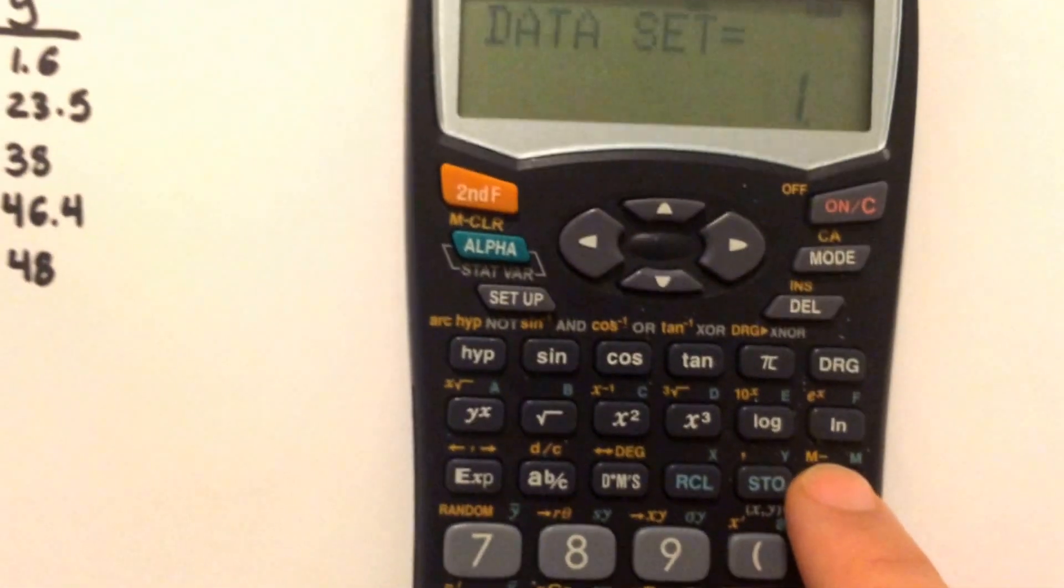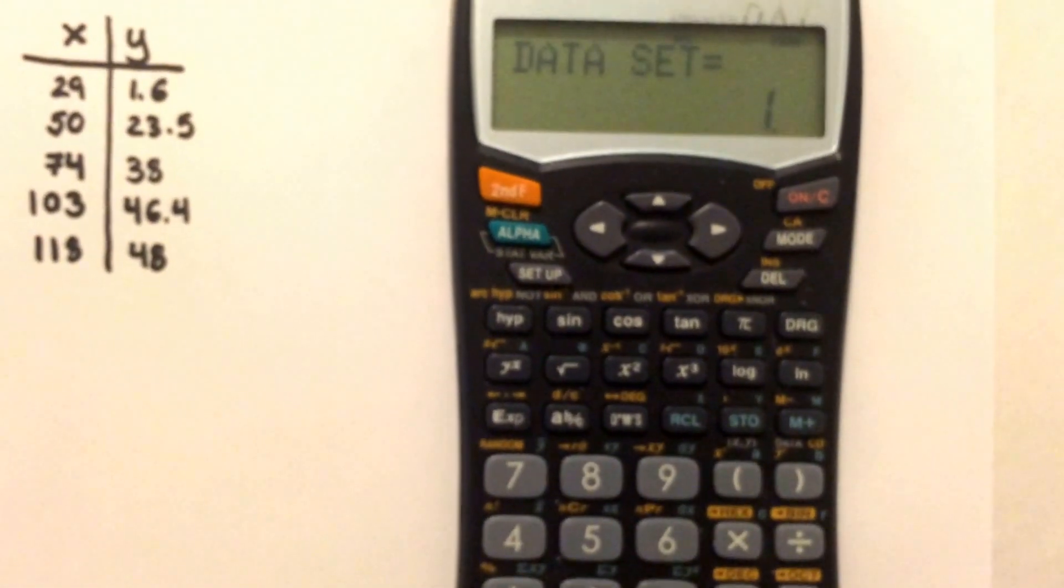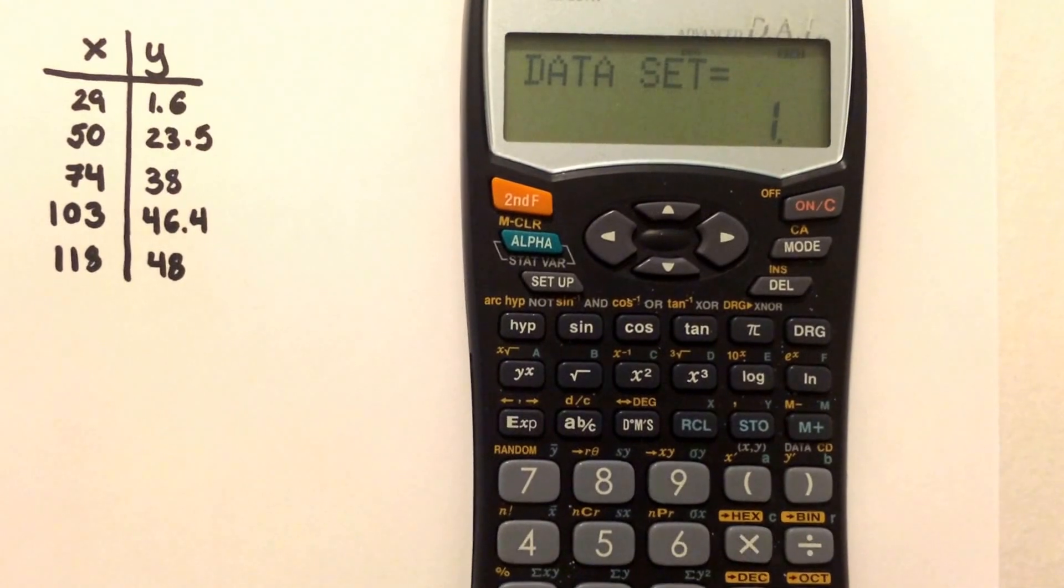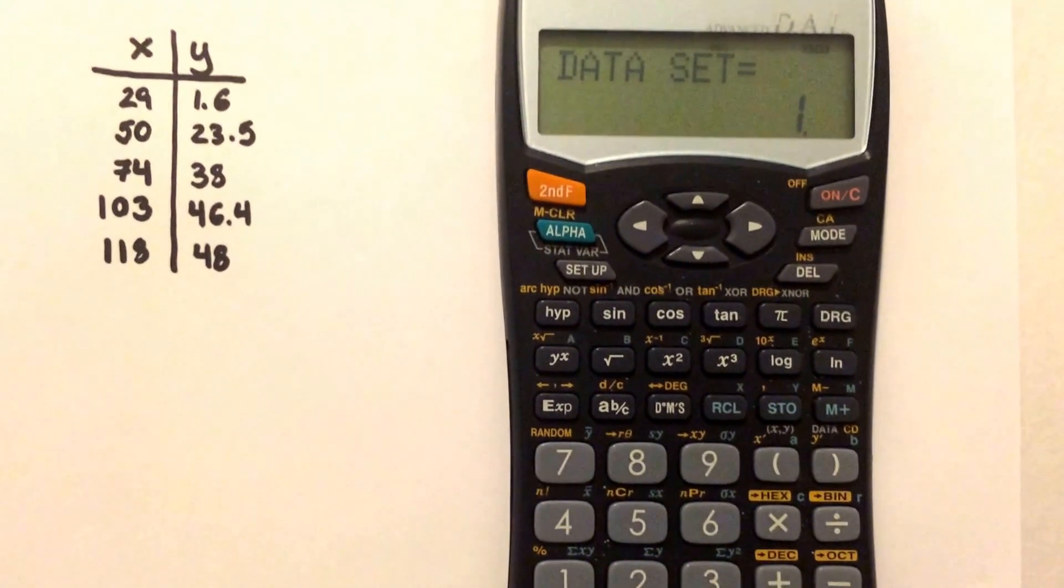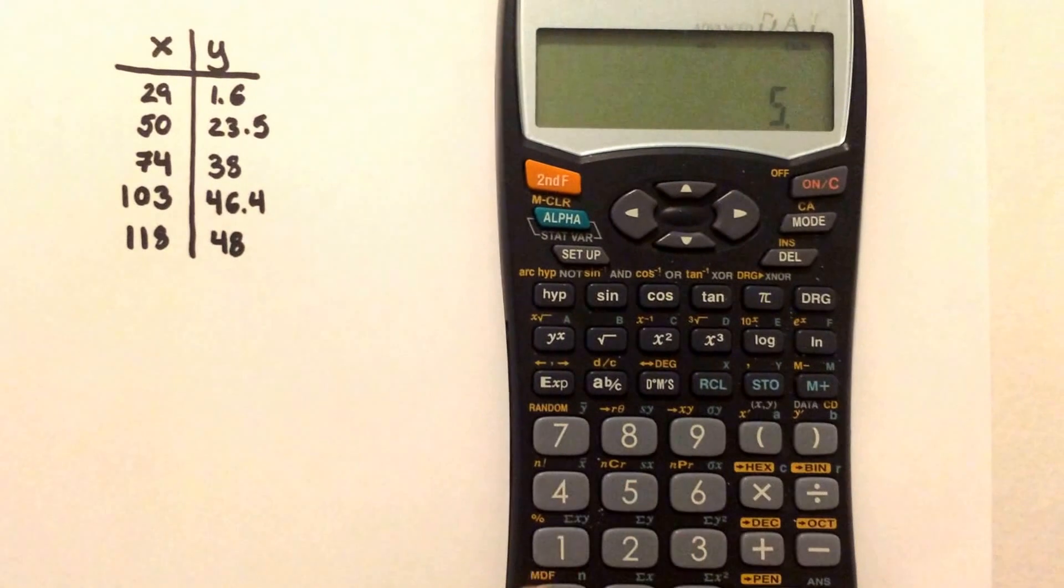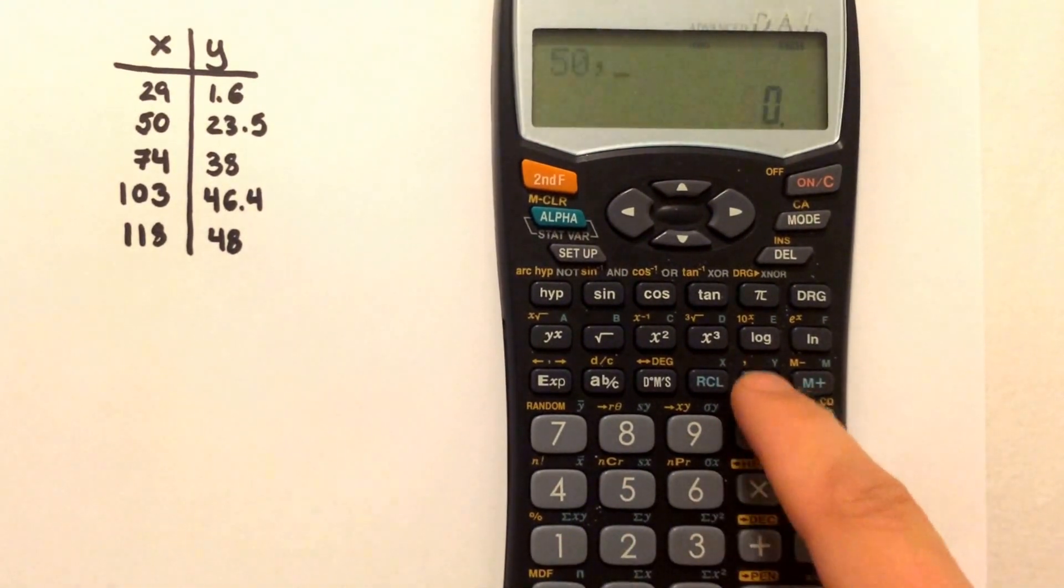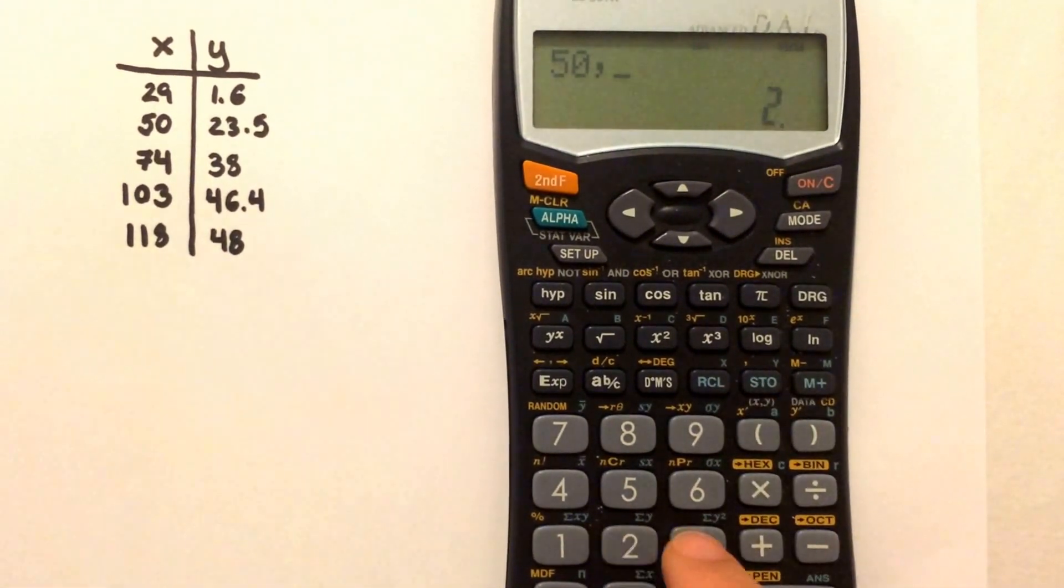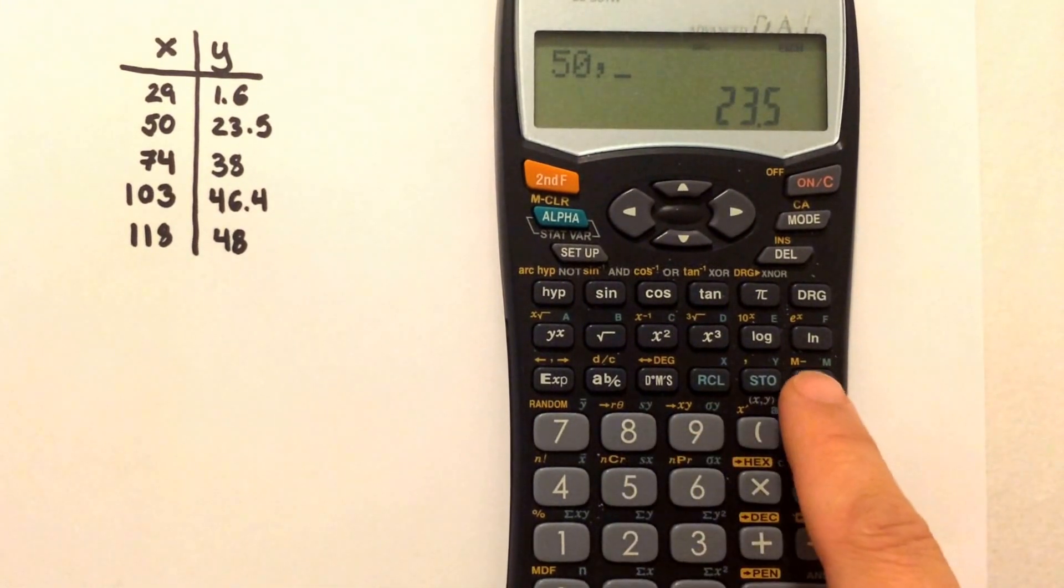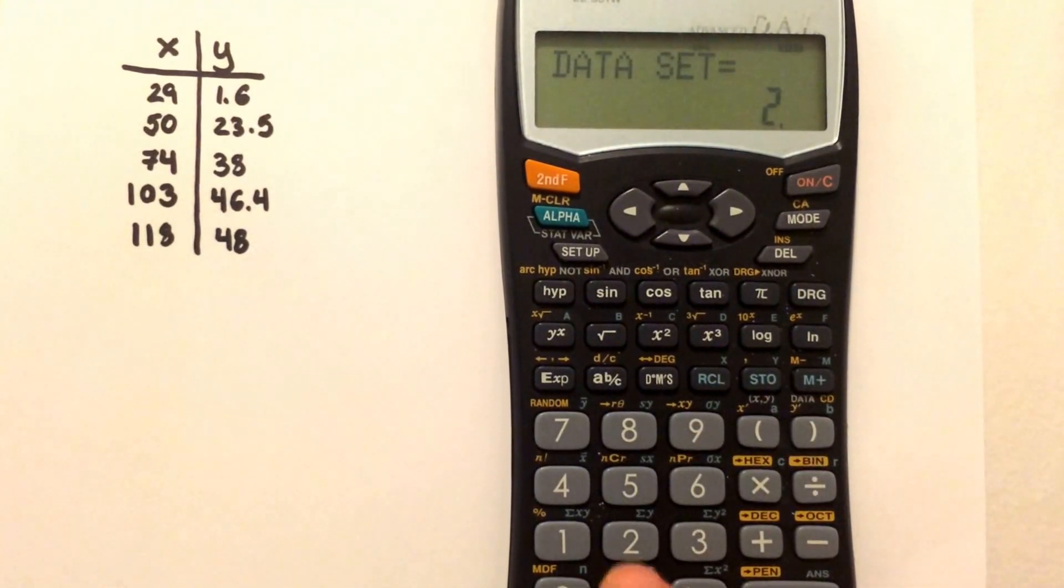That will put in your Y value, and as you go along, it's going to count the number of data you've entered. So that's your first one. Repeat: 50, STO, 23.5, M plus, that's your second one.